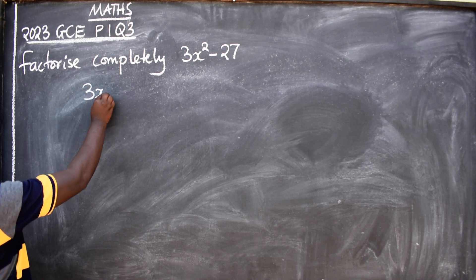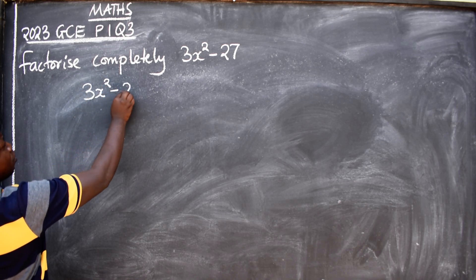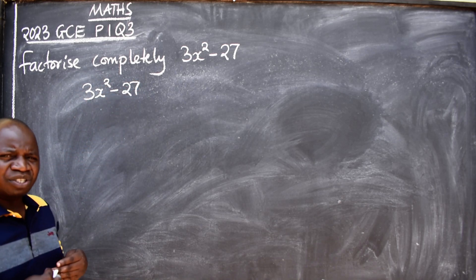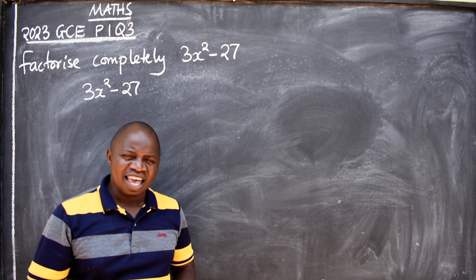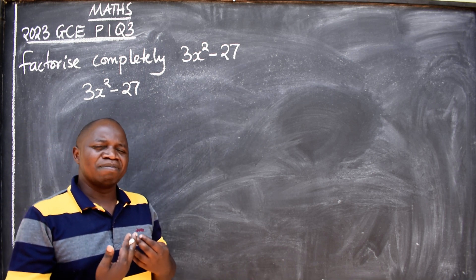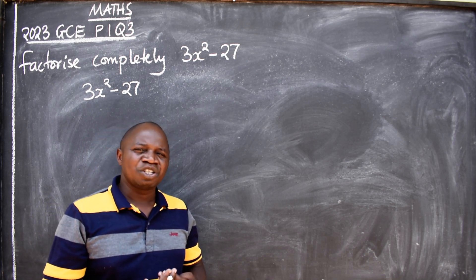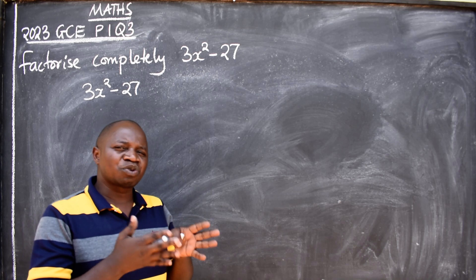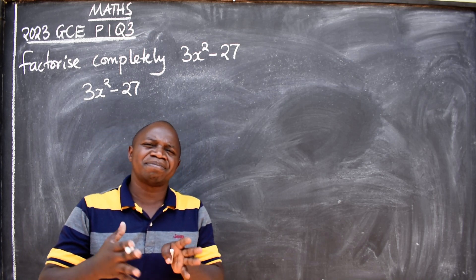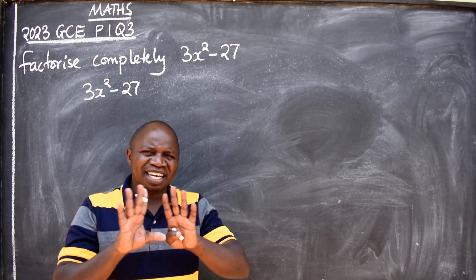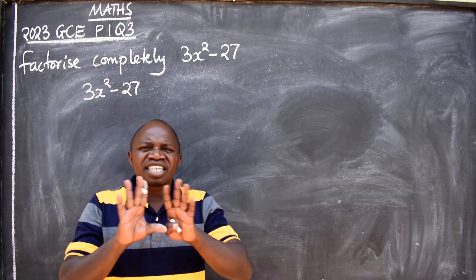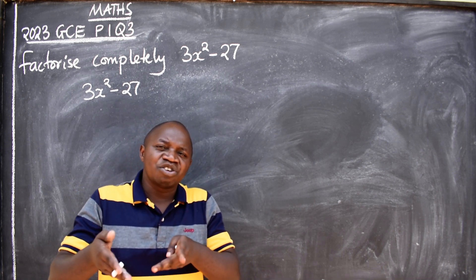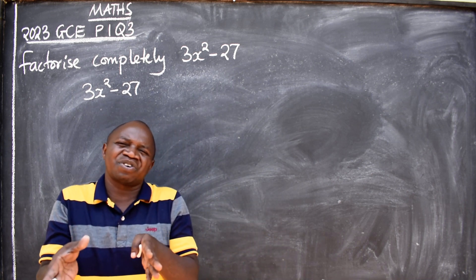Now as you are carrying out this type of factorization, the numbers that must be there should be square numbers. Even variables must be squared. If you identify that those things are not there, then they are saying you should perform common factorization first before the difference of two squares.